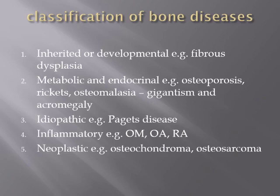Endocrinal bone diseases include gigantism and acromegaly, which are related to growth hormone released from the pituitary gland. If growth hormone increases before puberty — before the bone ends are closed — it leads to gigantism, where the individual grows larger in all dimensions compared to siblings and peers of the same age.